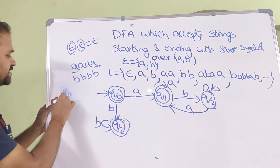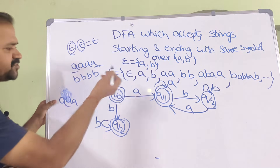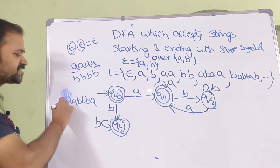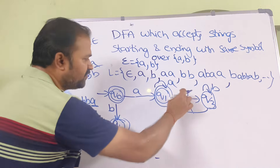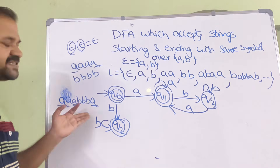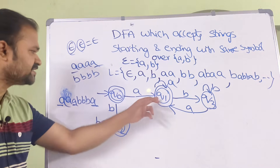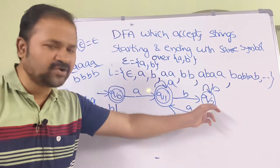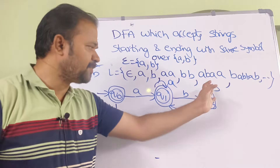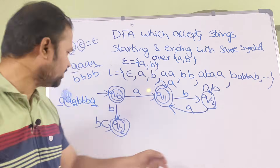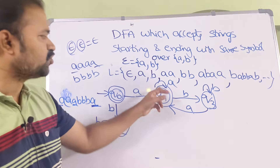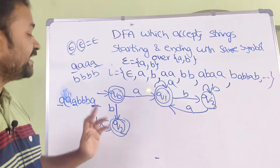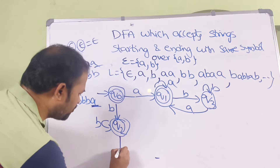For example, consider the string A, AA, BBB, A — it starts and ends with A, so it is valid. Tracing: Q0 on A → Q1; two more A's keep us at Q1; B moves us to Q3; two more B's keep us at Q3; the final A moves us back to Q1, the final state. So after any number of B's there may still be a final A.